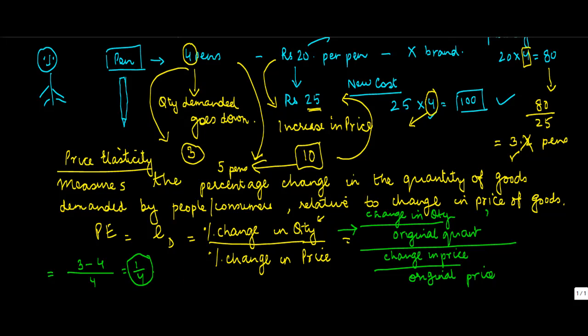So, the numerator is 1 by 4, how about the denominator change in price? Price was 25 minus 20, upon original price is 20. So, 5 upon 20, which again gives me 1 by 4.